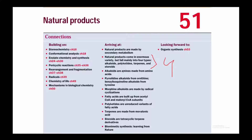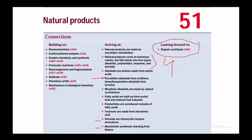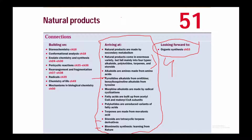We will discuss alkaloids as amines made from amino acids, then polypyrrolidine alkaloids from ornithine, benzylisoquinoline alkaloids from tyrosine, and morphine alkaloids made by radical cyclization. Fatty acids are built up from acetyl-CoA and malonyl-CoA subunits. Polyketides are unreduced variants of fatty acids. We will also discuss terpenes made from mevalonic acid, steroids as tetracyclic terpene derivatives, and biomimetic synthesis — learning from nature.